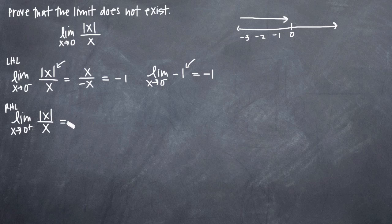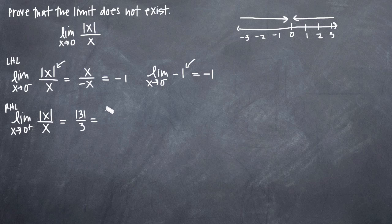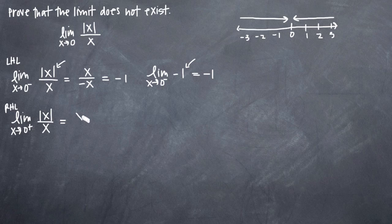Now we have to go and look at the right-hand limit. We'll end up with a similar situation. Imagining the values one, two, and three, coming in from this side approaching zero — if we plug in three or two or one, we'll always have three over three. Even with the absolute value bars, we get positive three over three, which gives us one. We'll always have a positive value over a positive value, and the numerator and denominator will be equal, so we always get one. We can write that as x over x, which always gives us one.